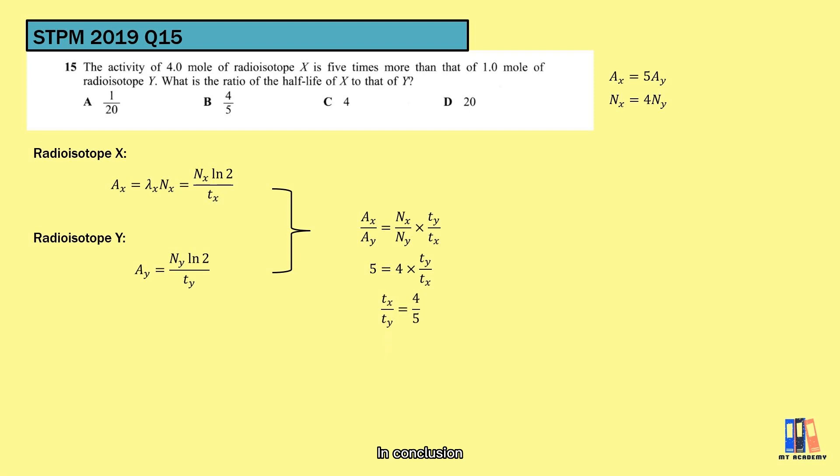In conclusion, the activity is proportional to the number of moles and inversely proportional to the half-life. You just need to be clear with those symbols and formulas. This topic should be not a problem, and that is the last topic of STPM physics for this semester.